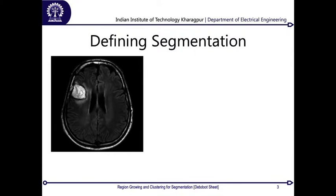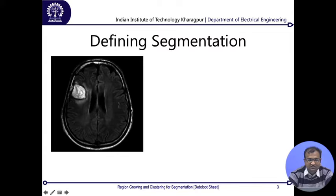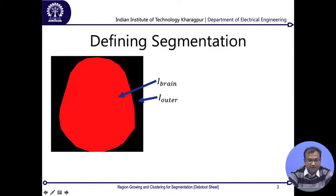Say I am looking into segmentation, and this is a T1 MR of the brain along with a lesion which appears quite bright. The problem is to segment out this lesion from the rest of the brain area and from the background, called the outer region. Everything in black is the outer, the part marked in red is the brain, and the part marked in yellow is the lesion — these three are called the three segments of the whole image.